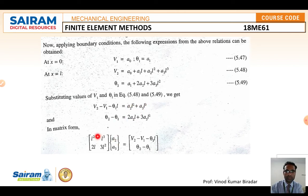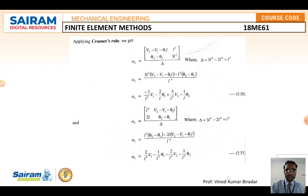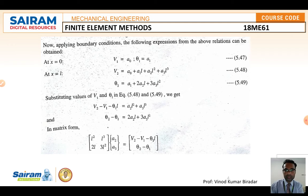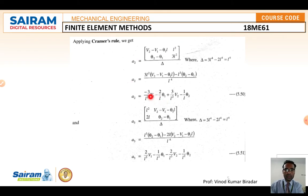Applying Cramer's rule to this matrix equation: a₂ = (v₂ - v₁ - theta₁L) and (theta₂ - theta₁) terms divided by delta, where delta = 3L² - 2L⁴... After simplification, a₂ = (-3L²v₁ - 2L·theta₁ + 3L²v₂ - theta₂) / L. Similarly, a₃ is obtained by the corresponding Cramer's rule application.